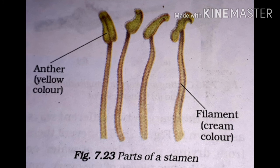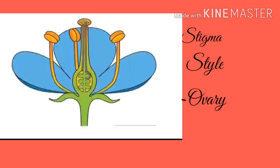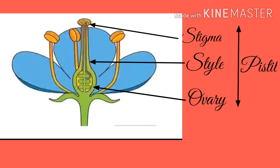The upper part is yellow in colour, called anther, and the lower part is cream in colour, called filament. Later, draw one stamen and label its parts.